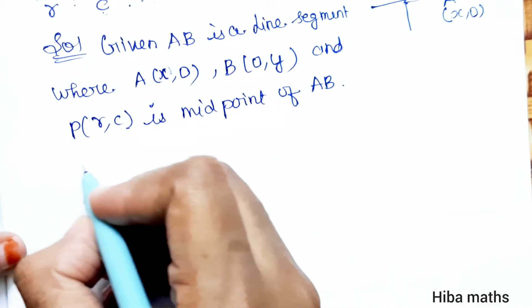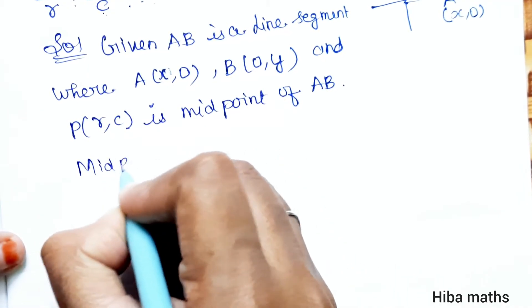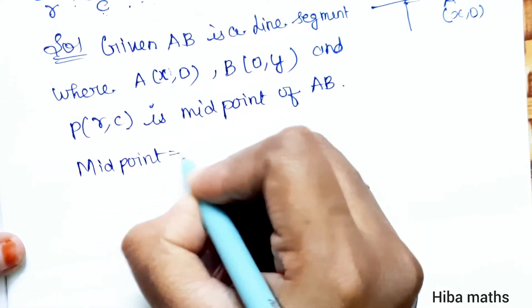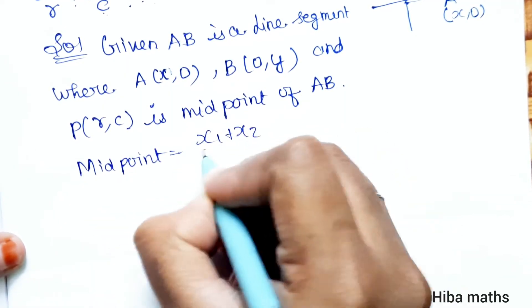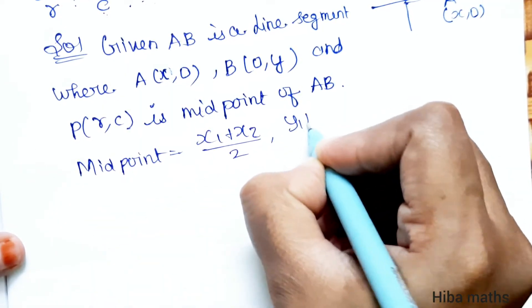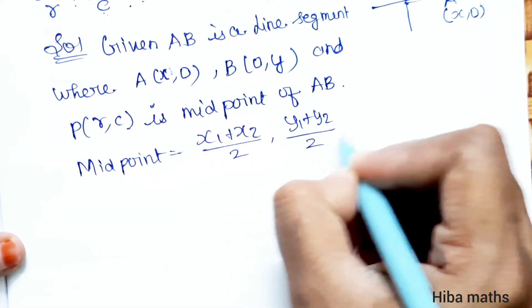Next what do we do? Use the midpoint formula. Midpoint is equal to (x1 plus x2 by 2, y1 plus y2 by 2).